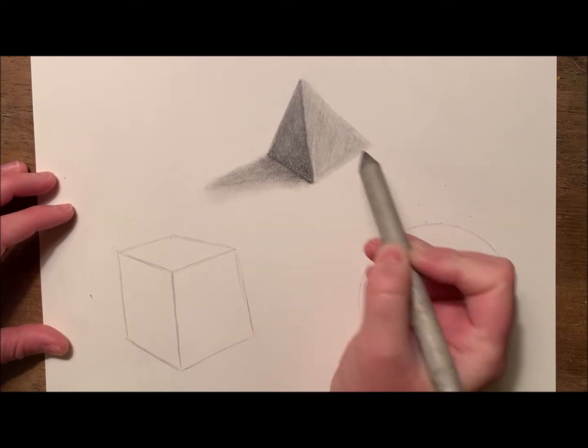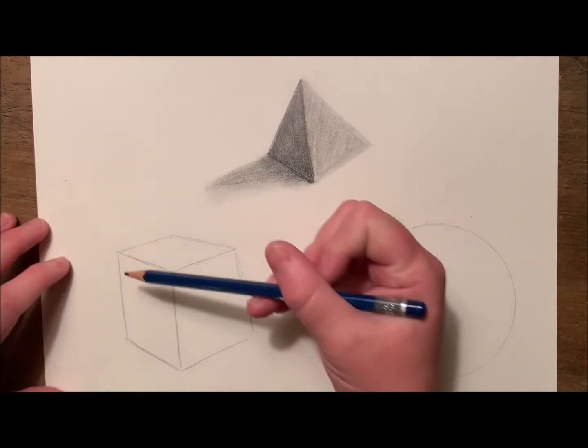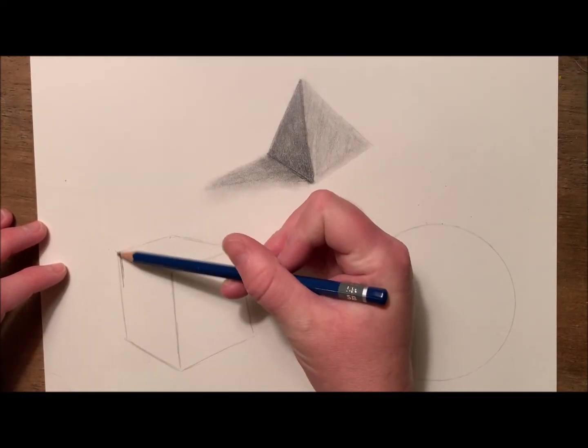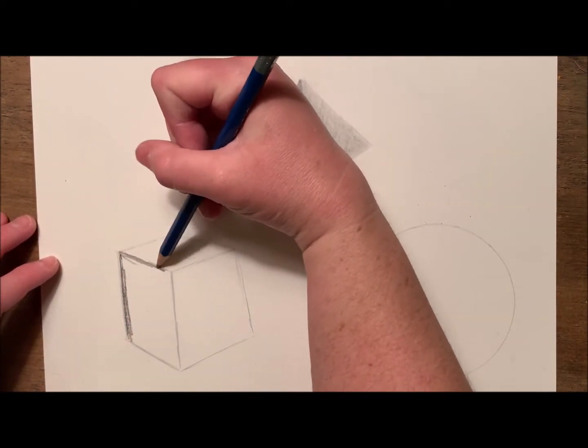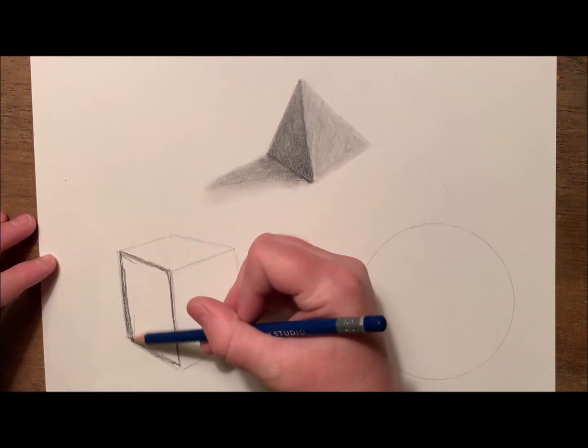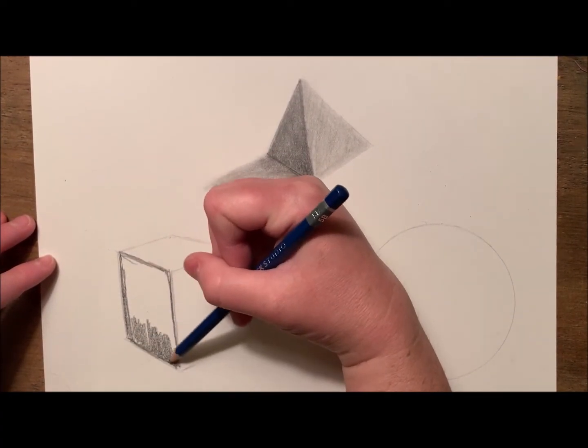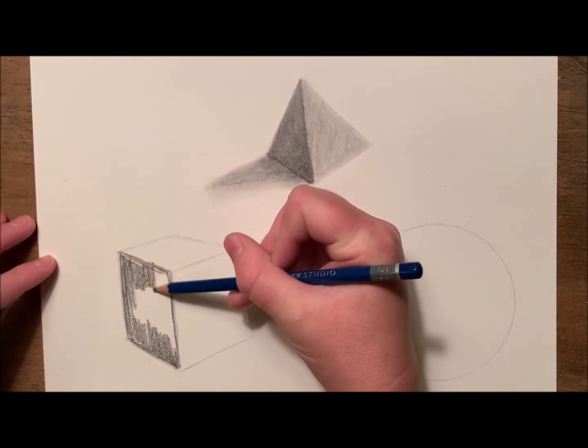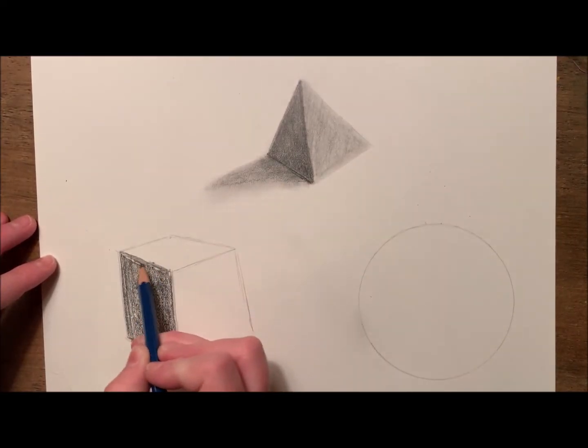All right, I'm ready to start shading the cube. So all three sides will have different values, and I'm going to go with the same thing as the pyramid and have my left-hand side be the darkest value. Using a heavy-handed pressure, I've shaded the entire left-hand side with my darkest value.